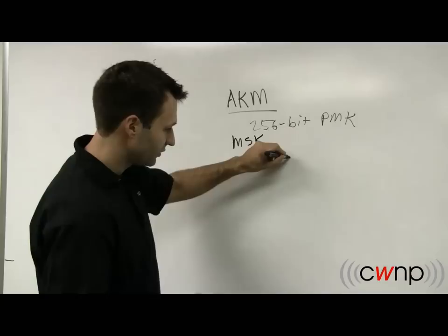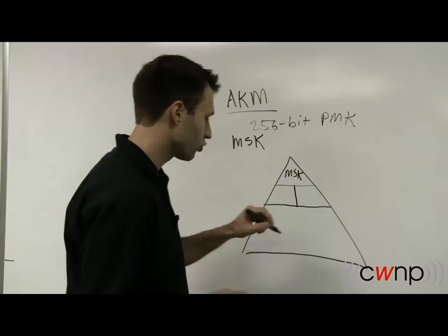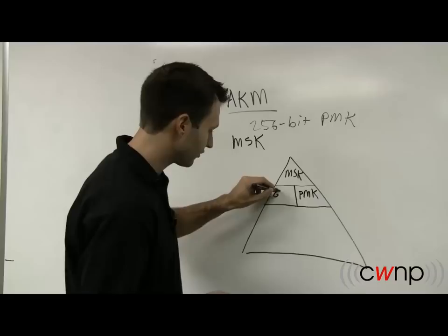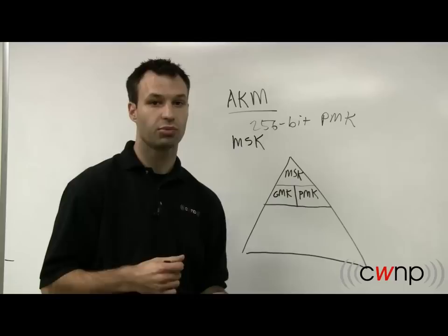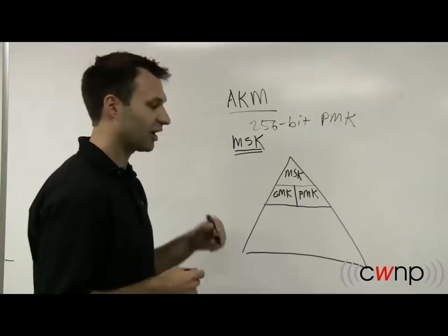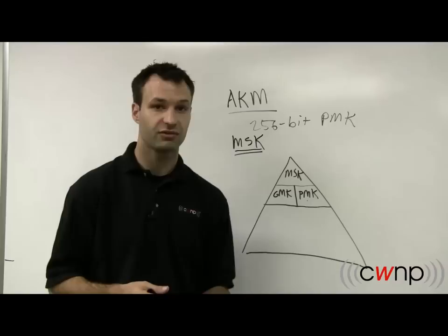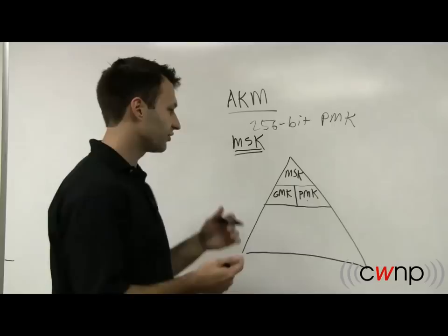This is a good point to draw our pyramid of the key hierarchy. At the very top is the MSK. Just below that, we split into a group master key and a pairwise master key. The pairwise master key is either derived from your passphrase or PSK in WPA and WPA2 personal, or in 802.1x, you get an MSK exported from the EAP process, which is converted into a PMK. As the standard says, the PMK is 256 bits and is the first 256 bits of the MSK. Interestingly, the MSK is actually only 256 bits, so they're essentially the same thing — just different nomenclature.